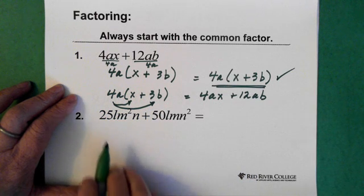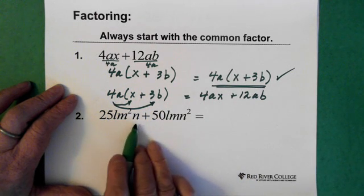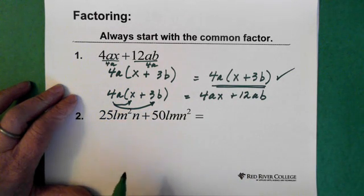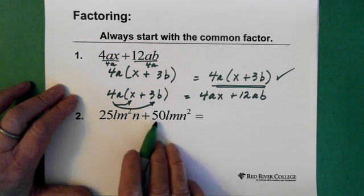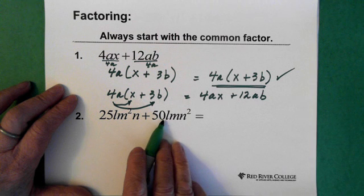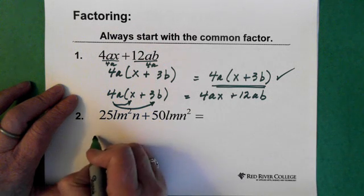Okay, let's take a look at the second one. Again, we're looking at it and asking ourselves what's common to both terms. We can see there's a 25 here, and we know that 50 is 25 times 2. So there has to be a 25.